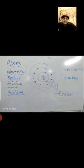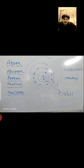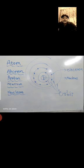So if an atom is not divisible, how can we say electrons, protons, and neutrons are the particles of an atom? According to the modern concept of the structure of the atom, atoms are divisible into subatomic particles like electron, proton, and neutron. So we can simply say electrons, protons, and neutrons are the subatomic particles of an atom.